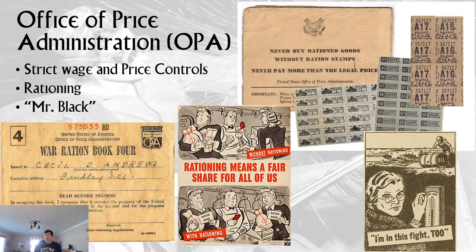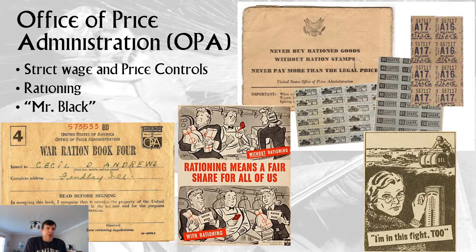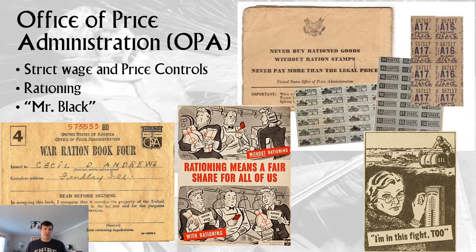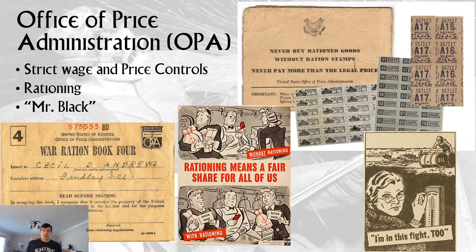Mr. Black became the name for the black market — you would go see Mr. Black to buy goods outside of rationing. Store owners and organized crime would get goods and sell them under the table to avoid rationing. Have you ever heard the term? That is illegally selling to avoid taxes — kind of like bootlegging in the 1920s. The United States did not have nearly as strict rationing as Britain, the Soviet Union, Japan, or Germany.